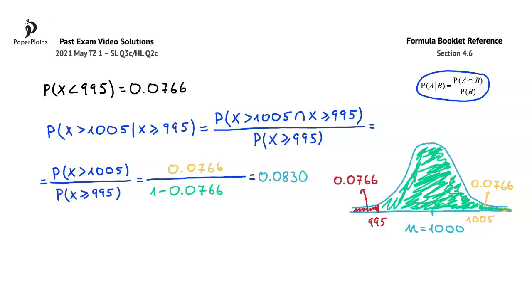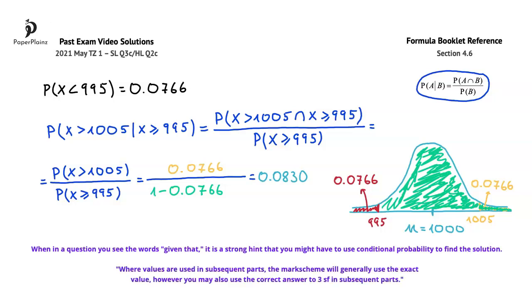Let's see two exam-taking tips that can help you earn full marks on similar questions. The first one is that when in a question you see the words given that, it is a strong hint that you might have to use conditional probability to find the solution. The second one is that where values are used in subsequent parts, the mark scheme will generally use the exact value, however you may also use the correct answer to three significant figures in subsequent parts.